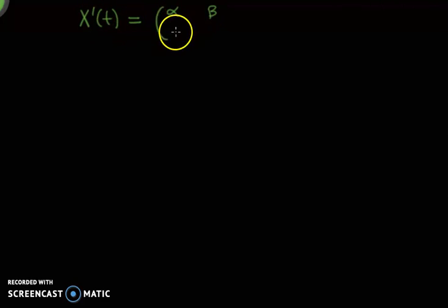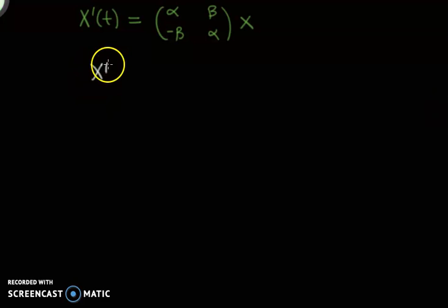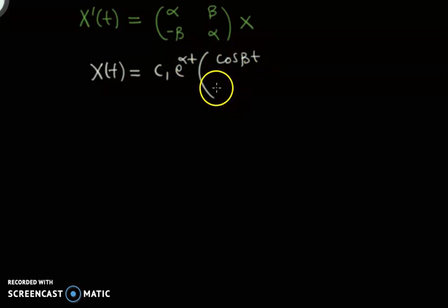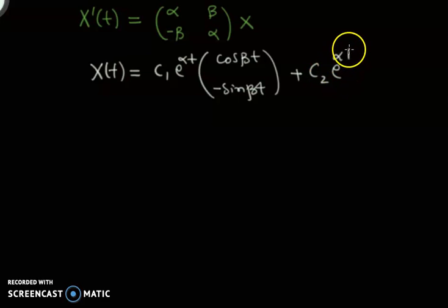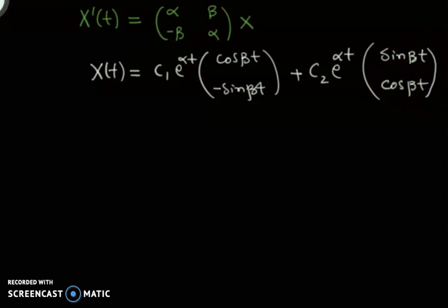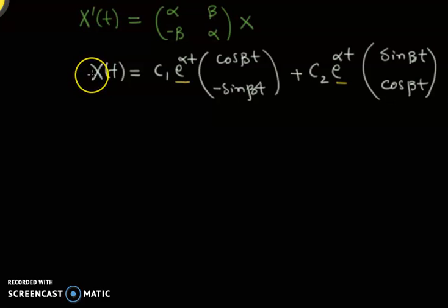Bismillahirrahmanirrahim. Welcome back viewers. In the previous session, we have seen that for this kind of dynamical system, the solution looks like this: x of t was c1 times e to the alpha t cos(beta t) minus sin(beta t), plus c2 e to the alpha t times sin(beta t) cos(beta t). We also discussed that because of the involvement of this term, the trajectories — these solutions — are spirals.